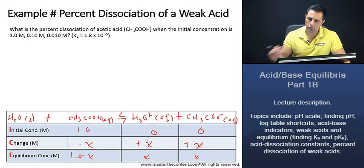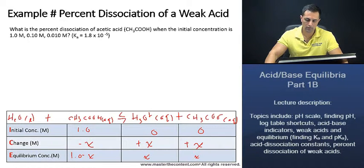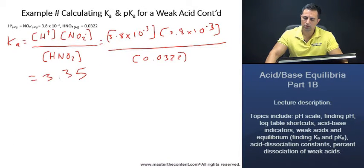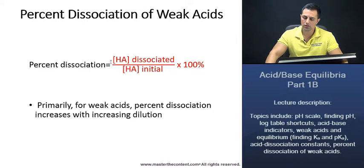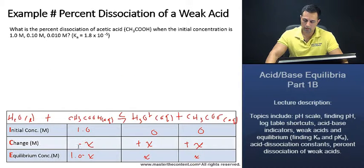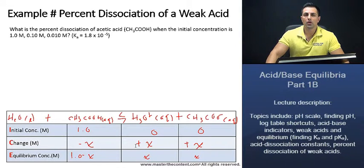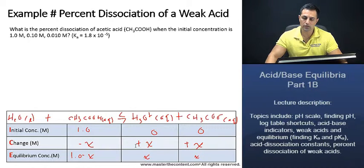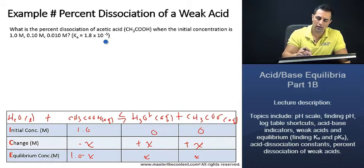What we're actually looking for is the concentration that dissociated — that is our x value. We're given the initial concentration. We're trying to solve for x. Because we don't have pH this time, we can find the value of x through the acid dissociation constant.